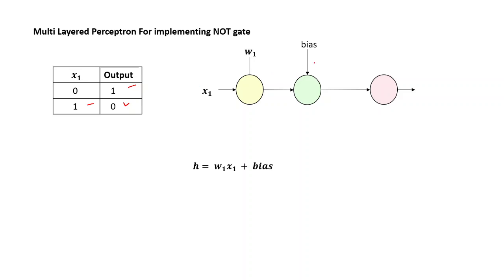This is the basic multilayer perceptron. It has one input layer, since we have just one input — one feature in our example — and there is one hidden layer, and there is one output layer. Since there's just one output, there's just one node that will be outputting the value. Your hidden layer value will be calculated as W1X1 plus the bias.